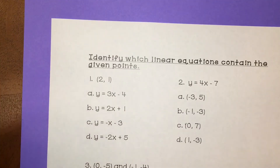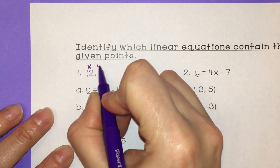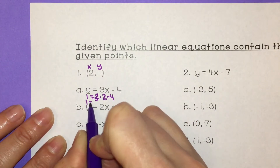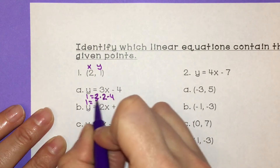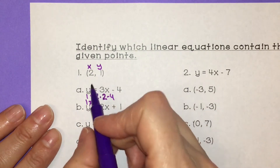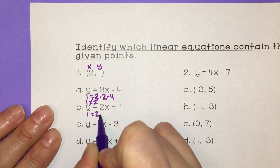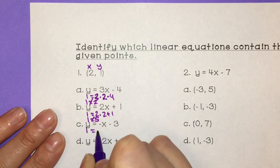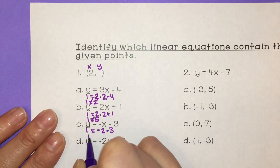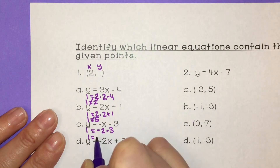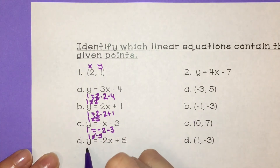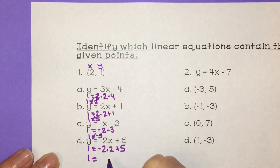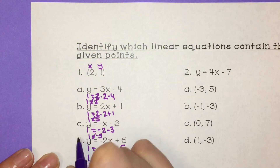So this first one, plug 2 in for x and 1 in for y. You have 1 equals 3 times 2 minus 4 — that gives 1 equals 6 minus 4 is 2, so those don't equal. Check the next one: 1 equals 2 times 2 plus 1 — 1 equals 4 plus 1 is 5, that one didn't work. Next: 1 equals negative x is 2, minus 3 — 1 equals negative 2 minus 3 is negative 5, the two sides aren't equal. Finally: y is 1 equals negative 2 times x is 2, plus 5 — 1 equals negative 2 times 2 is negative 4, and negative 4 plus 5 is positive 1. So letter D works.